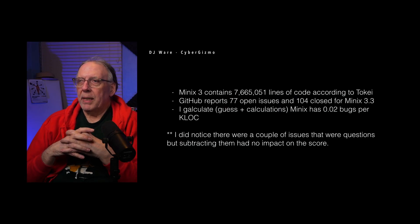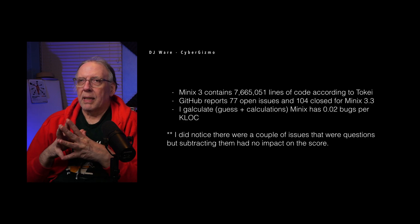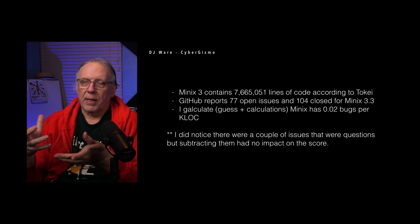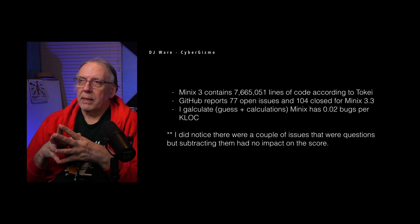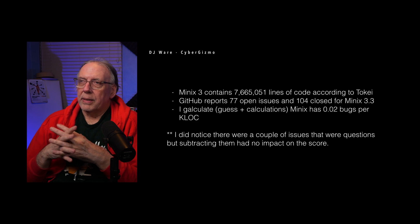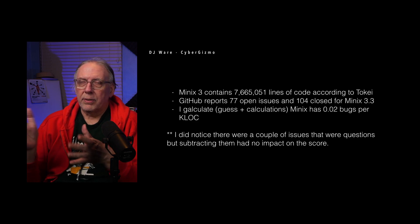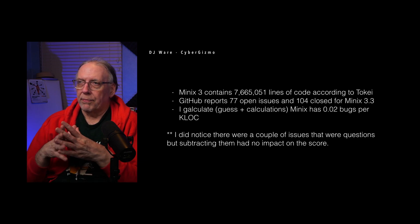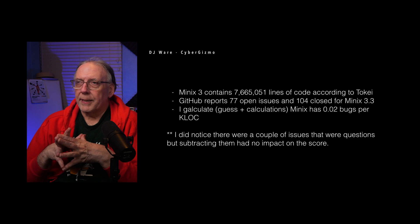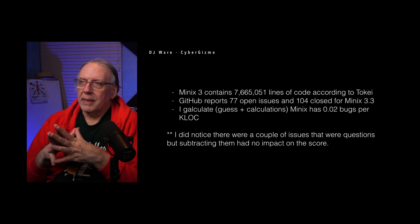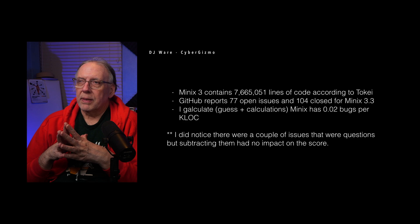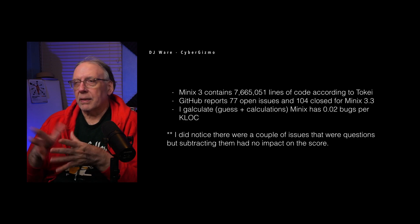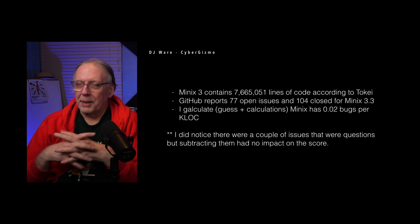Minix — I've seen lectures by Andrew Tanenbaum saying they're really trying hard to reduce the amount of discovered bugs after a release. Their code base is around 7.6 million lines of code according to Tokei. GitHub, which is their issue tracker, reports about 77 open issues and about 104 closed for Minix 3.3. I'm calculating that means about 0.02 bugs per thousand lines of code.